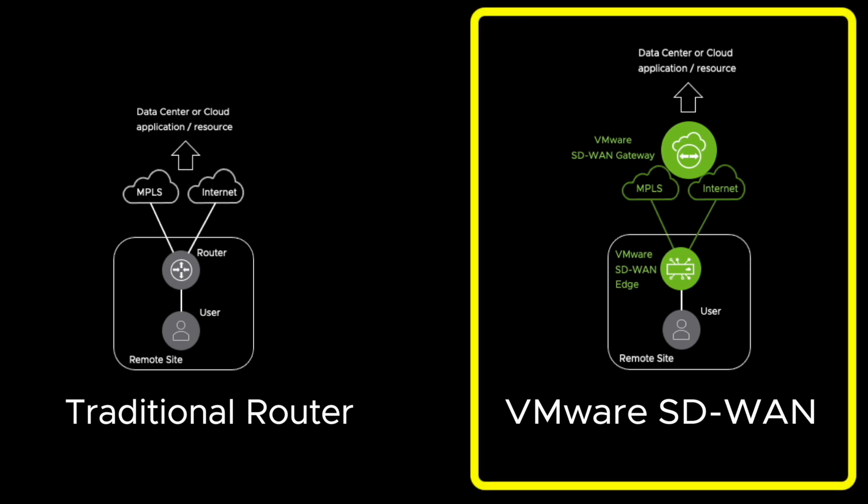What is visualized on the right is a similar setup, but this time we have deployed VMware SD-WAN Edge with an overlay network introduced earlier as DMPO that can dynamically remediate against any network anomalies on those WAN circuits, and also is able to utilize multiple WAN links simultaneously.